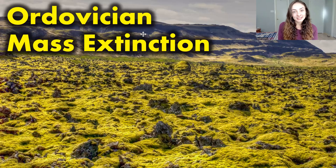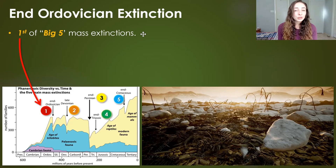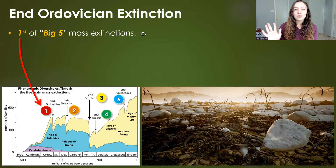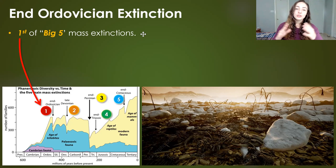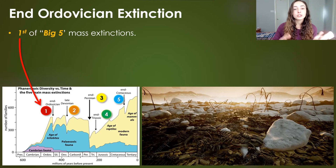There have been many mass extinctions throughout Earth's history, but the one that gets the most attention is of course the one involving dinosaurs and an asteroid. But today I'm going to be talking about the Ordovician mass extinction event. The End Ordovician mass extinction event is the first of the big five mass extinction events recognized as the largest five mass extinctions throughout the Phanerozoic eon, from around 550 million years ago to today.